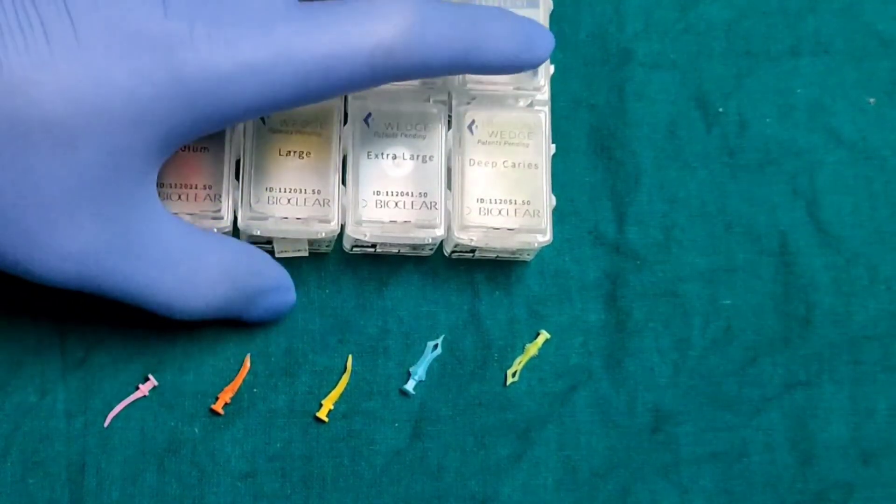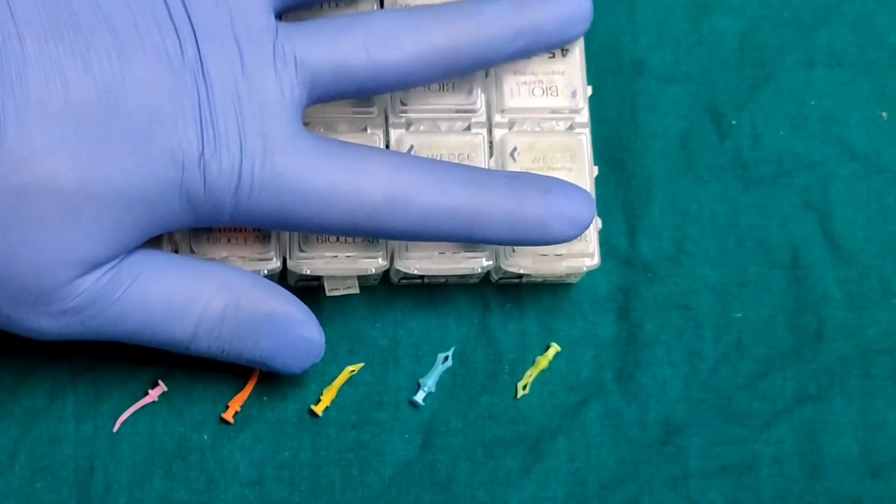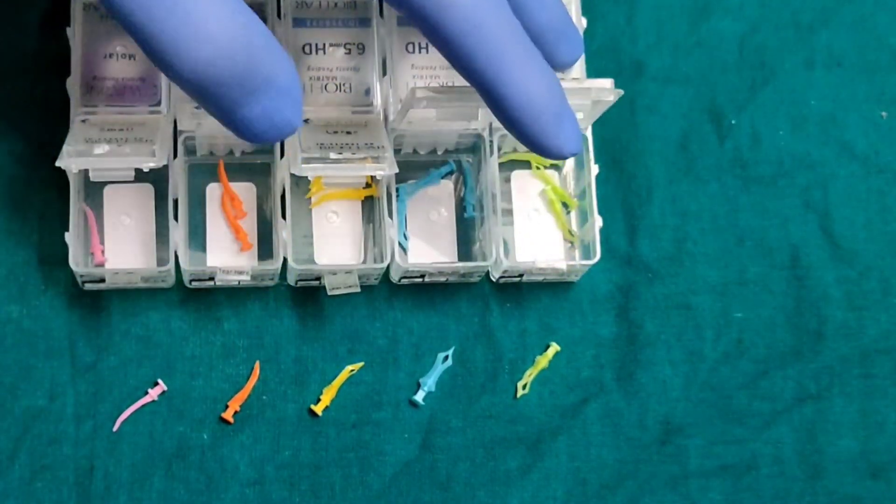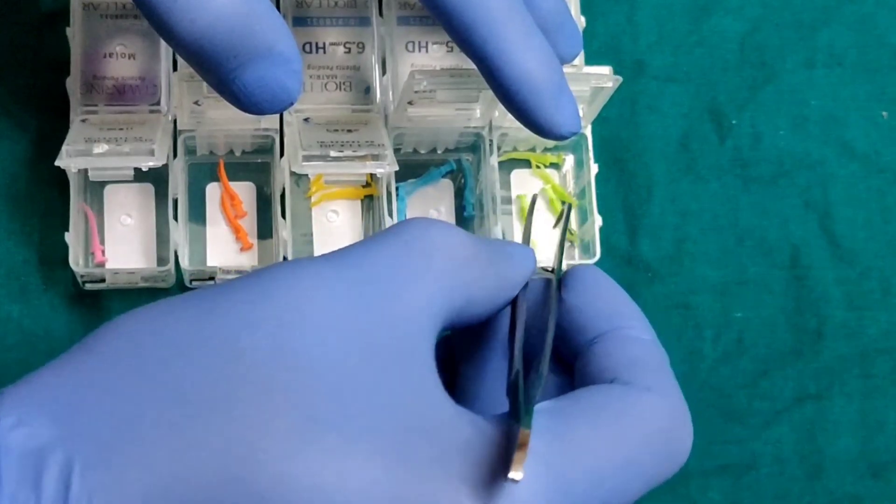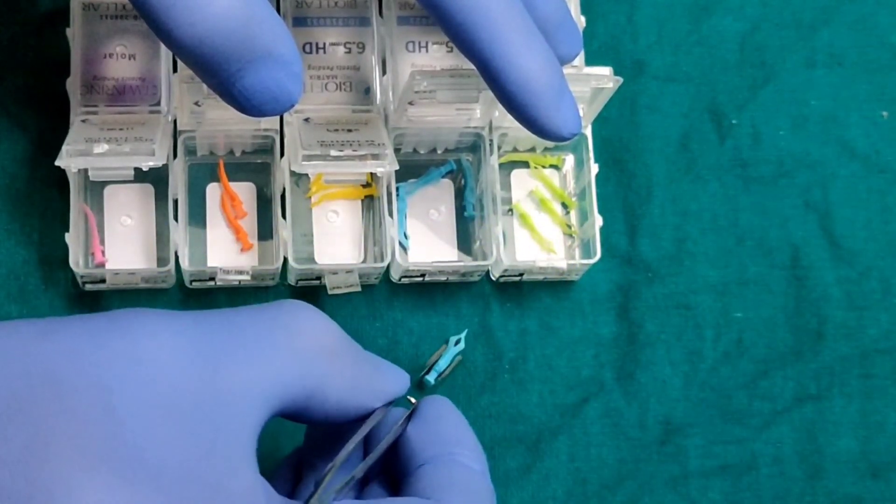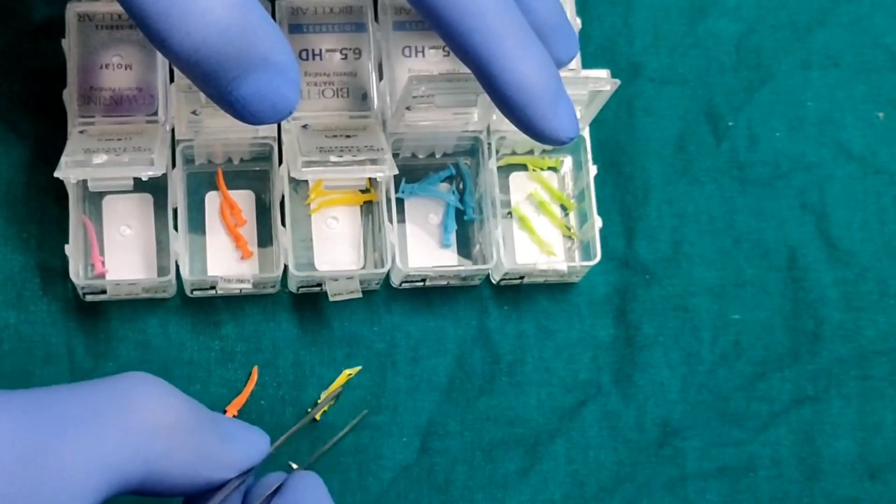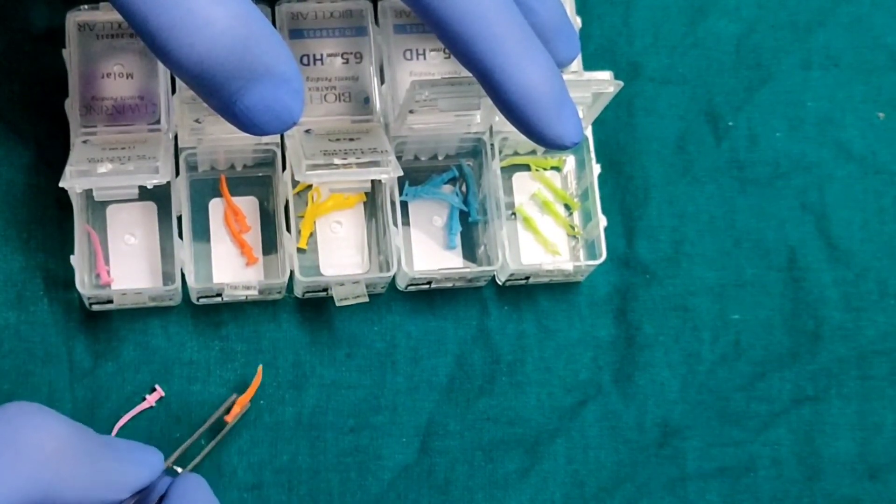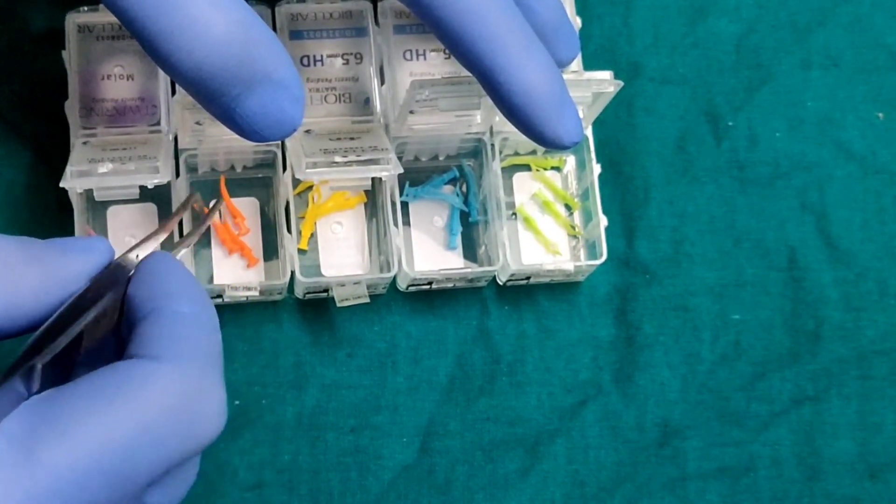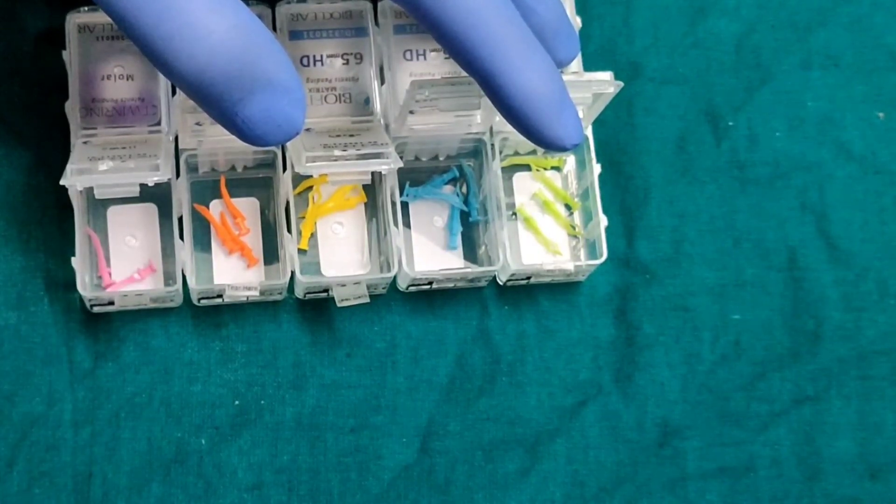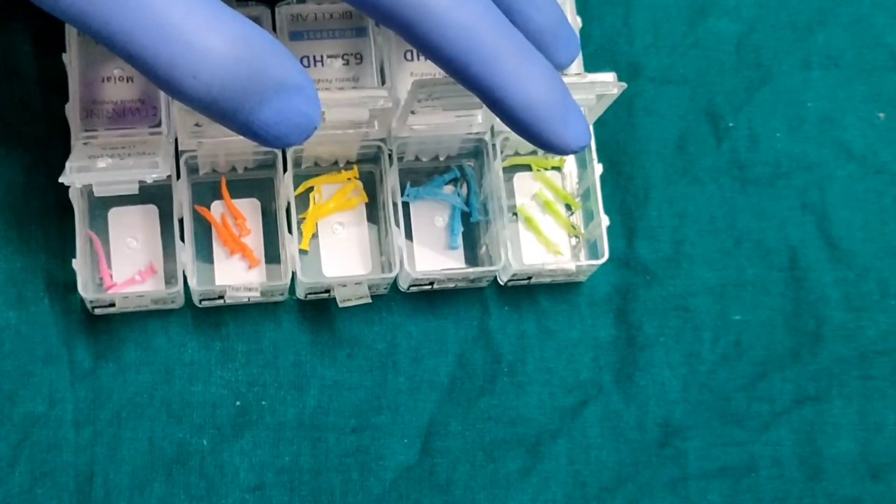The manufacturer claims that the BioClear diamond wedge is designed to solve many of the difficulties in using traditional wedges. While still maintaining the strong separation, the anatomical design and flexible material creates a complete marginal seal which eliminates the uncontrolled flow of excess composite and minimizes cleanup after composite has been cured.